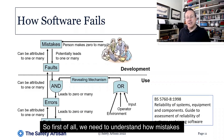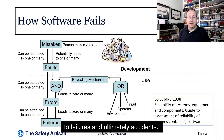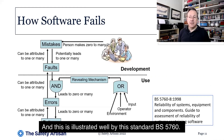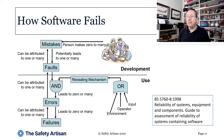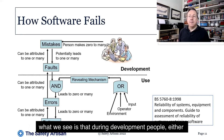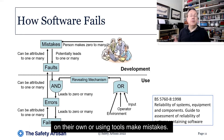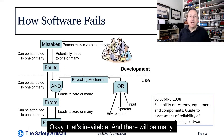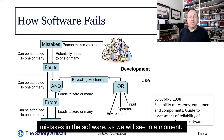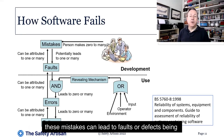First of all, we need to understand how mistakes made in software can lead to failures and ultimately accidents. This is illustrated well by the standard BS 5760. What we see is that during development, people — either on their own or using tools — make mistakes. That's inevitable. And there will be many mistakes in the software, as we will see in a moment. These mistakes can lead to faults or defects being present in the software.